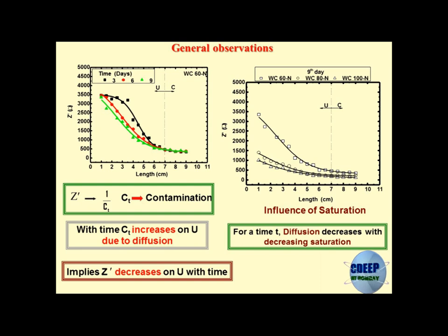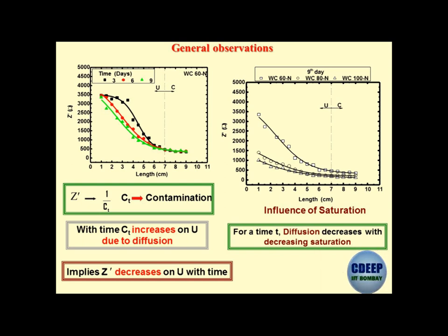Coming back to the equation, resistance or impedance is inversely proportional to concentration of contaminants - more the concentration, lesser the impedance. Using this concept, we have found an equivalent D value, that is the diffusion coefficient, in the form of electrical diffusivity. This electrical diffusivity has been used to define the contaminant transport process - this is how profiling is done over days, showing how impedance changes with respect to length. For more detail, read the papers by Srideep and myself.